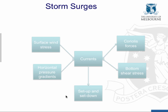What causes a storm surge is firstly, shear stress on the water surface produced by wind, which pushes water along and produces a current. There are bottom shear stresses as well, influencing that current. And because the current involves a large body of water, that also interacts with Coriolis forces. At the same time, we can get horizontal pressure gradients within the storm, which also produce a current.